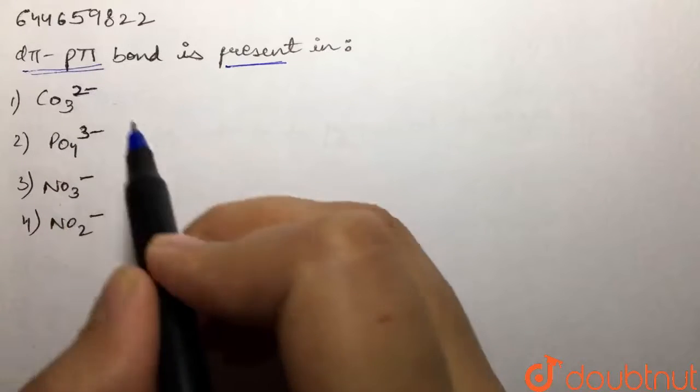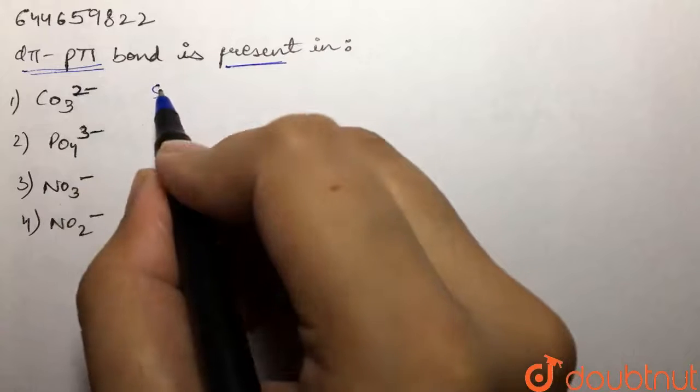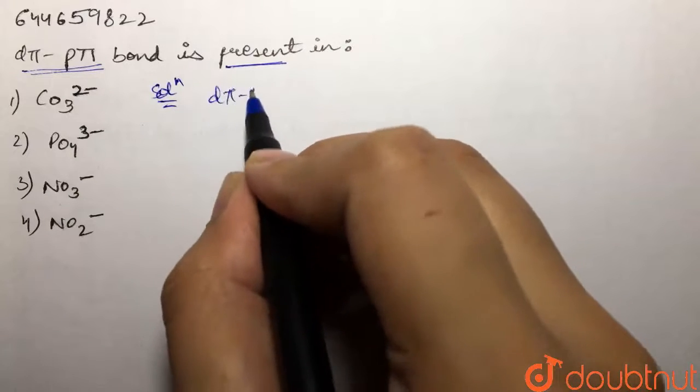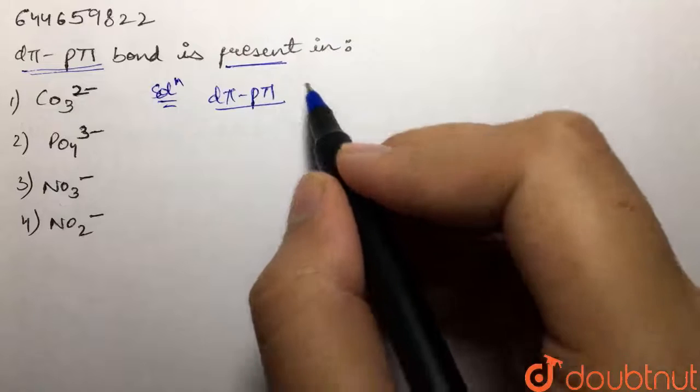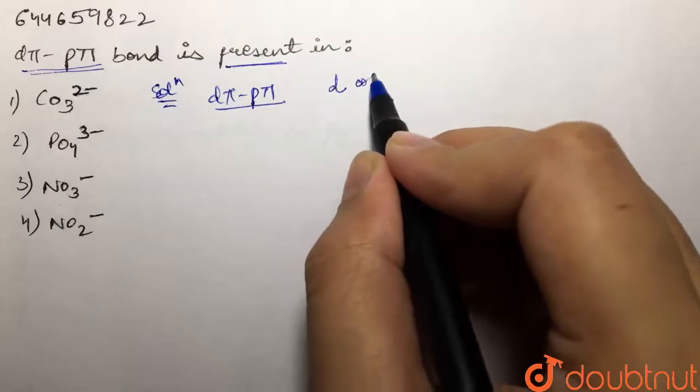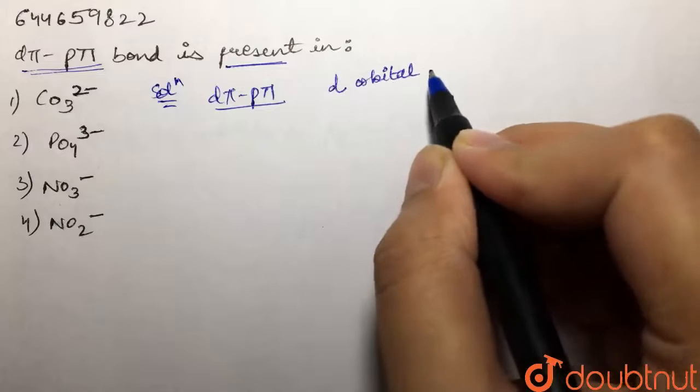First of all, what is the d-pi p-pi bond? D-pi p-pi bond is a pi bond and nothing else. This is basically a bond that is formed by the sidewise overlapping between the d orbital of one element and the p orbital of another element.